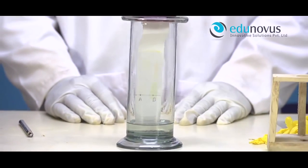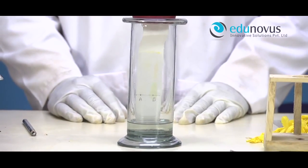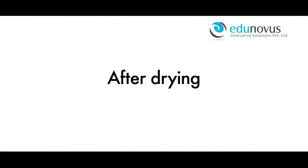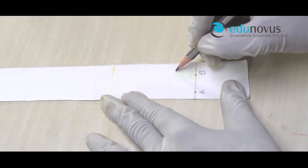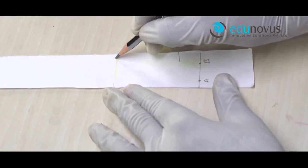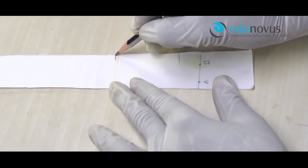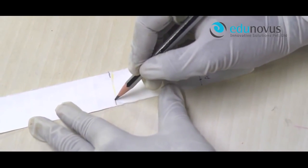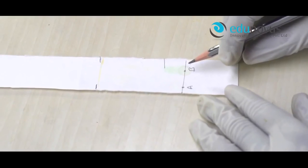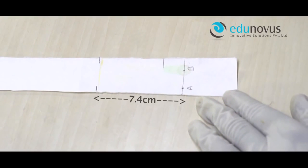Once the solvent stops rising, take the filter paper out of the jar and dry it. Mark the distance that the solvent has risen on the paper. Here it is 7.4 cm. This is called the solvent front.